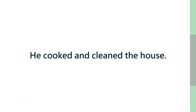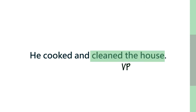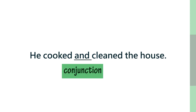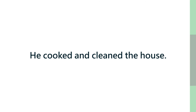Now, verb phrases — which are probably the most important kind of phrase. Consider 'He cooked and cleaned the house.' 'Cooked' is a verb phrase and 'cleaned the house' is a verb phrase. They have been coordinated properly, and therefore the sentence is grammatical.